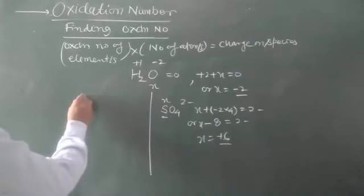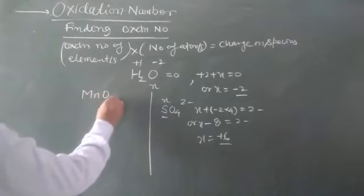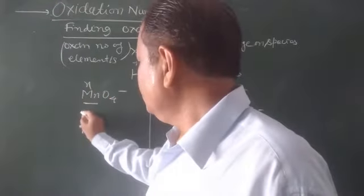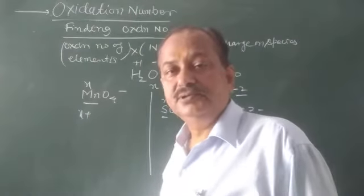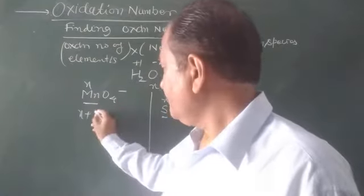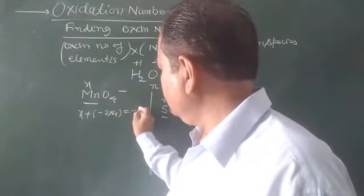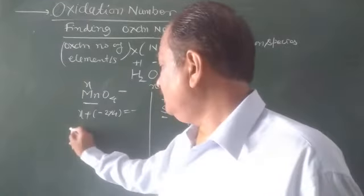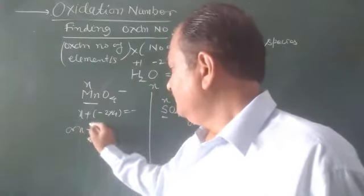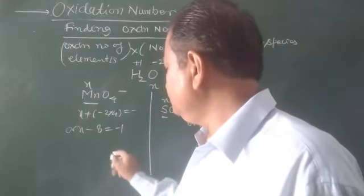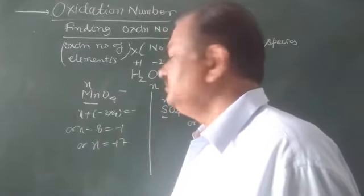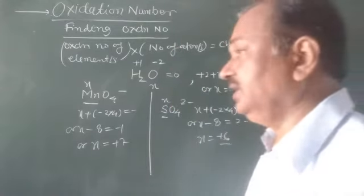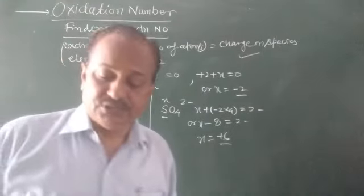Coming to MnO₄⁻, let manganese's oxidation number be X. Oxygen has a charge of minus two, so X + (−2 × 4) = −1, meaning X − 8 = −1, therefore X equals plus seven. Similarly, we can find the oxidation number for any species by knowing its formula. This is about finding the oxidation number.